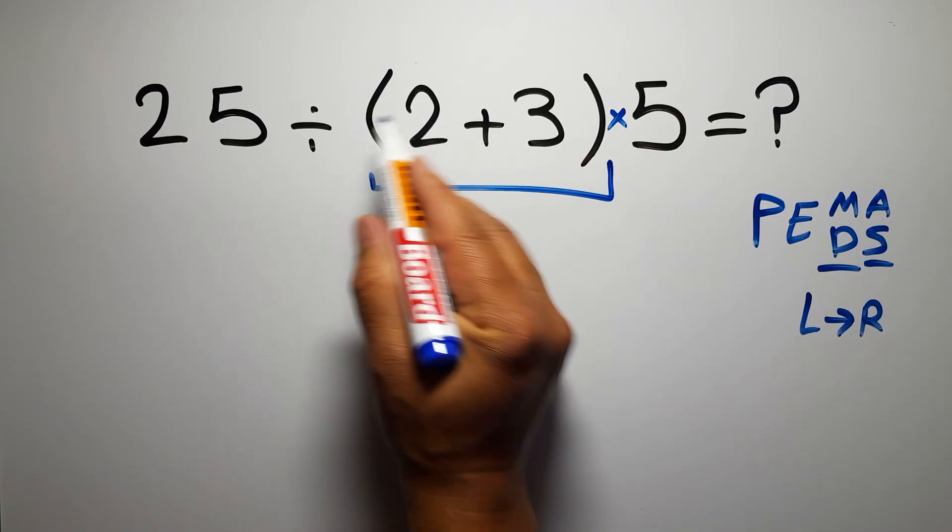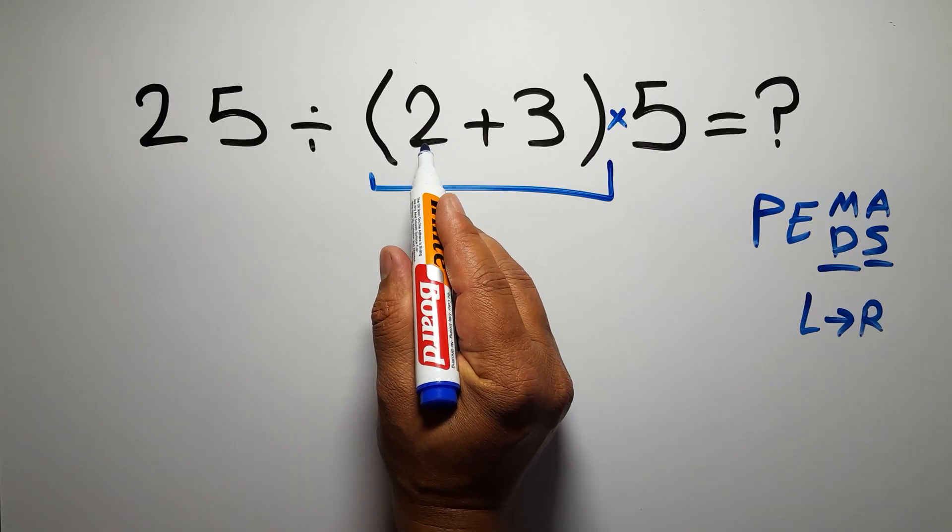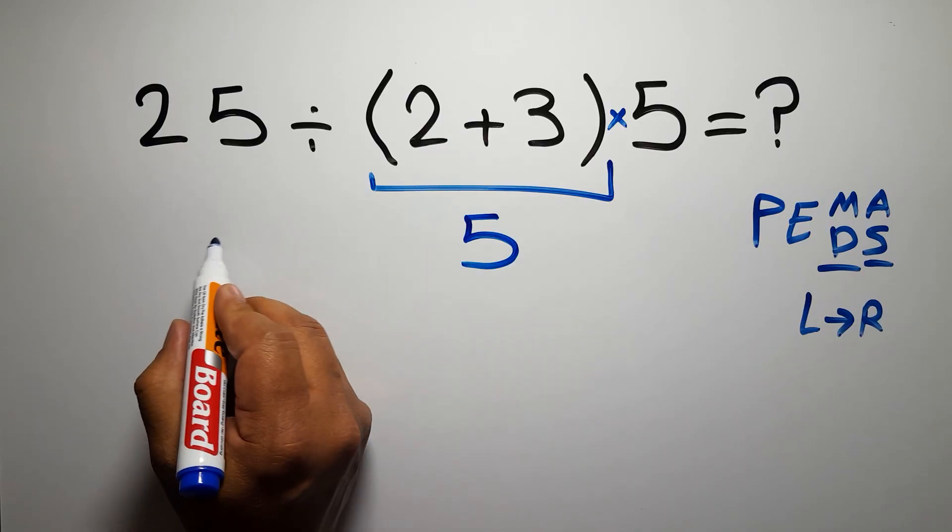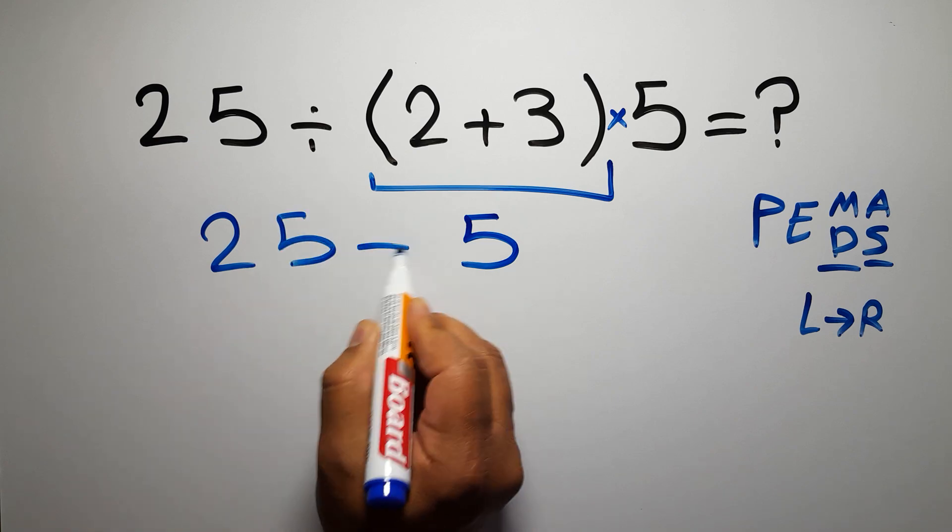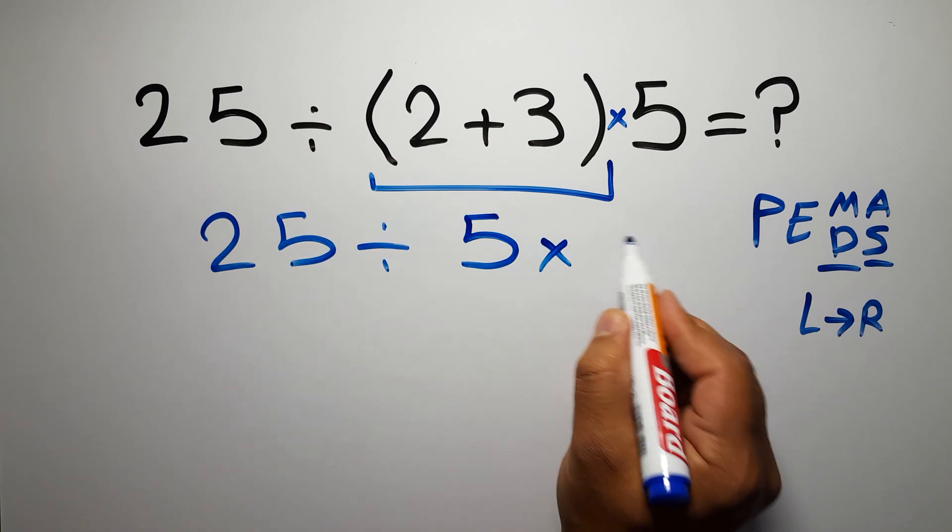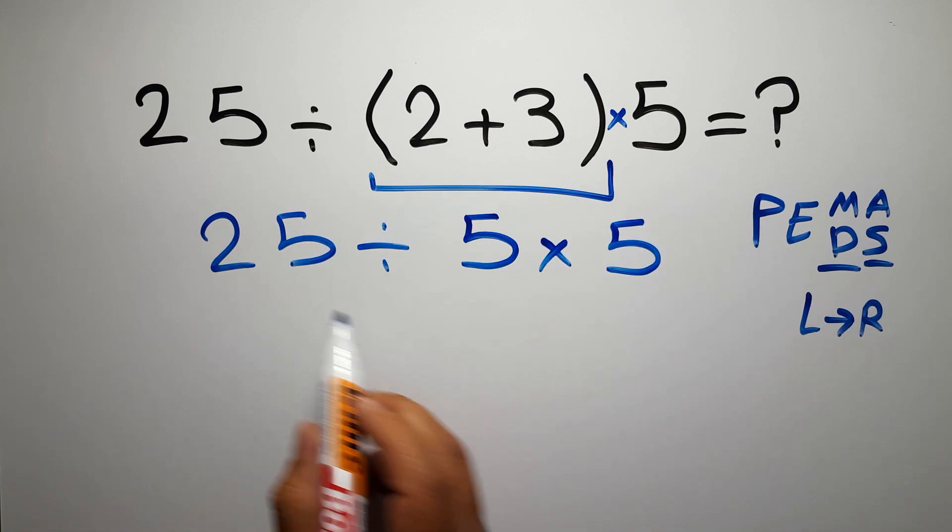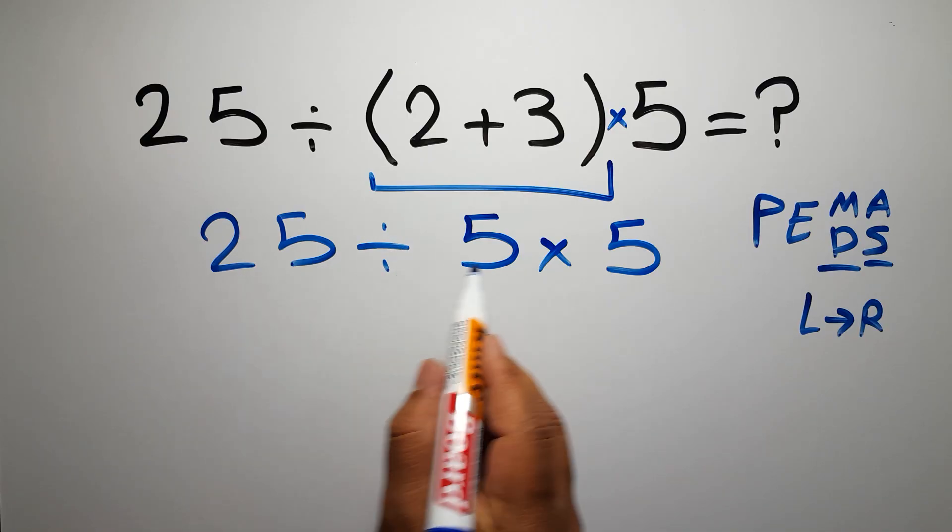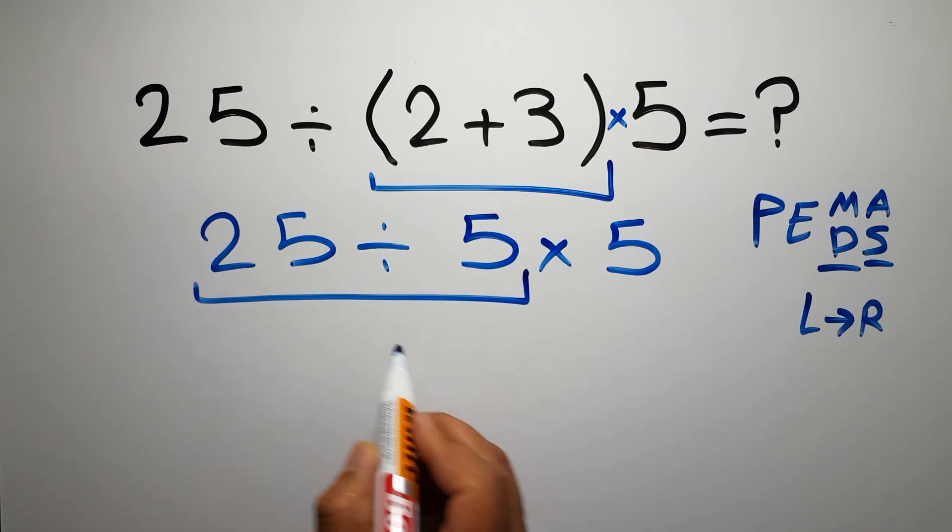So first these parentheses. Inside these parentheses, we have 2 plus 3, which equals 5. So 25 divided by 5, then times 5. No, we have to do this division. 25 divided by 5 gives us 5.